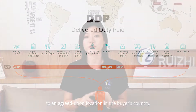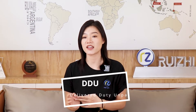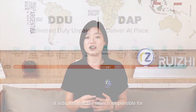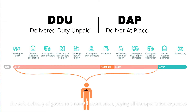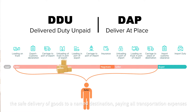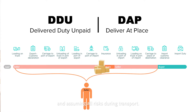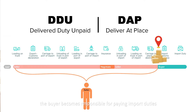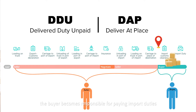Number two, DDU — Delivered Duty Unpaid — or DAP — Delivered at Place. It indicates that the seller is responsible for the safe delivery of goods to a named destination, paying all the transportation expenses and assuming all risks during transport. Once the goods arrive at the agreed-upon location, the buyer becomes responsible for paying import duties as well as further transport costs.